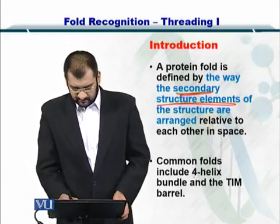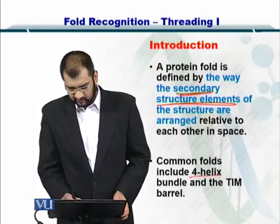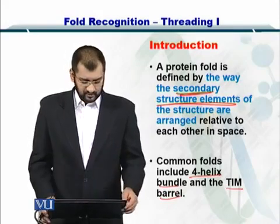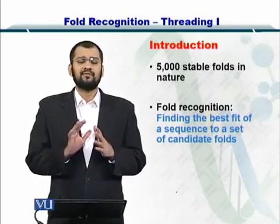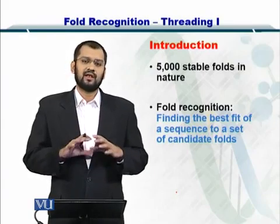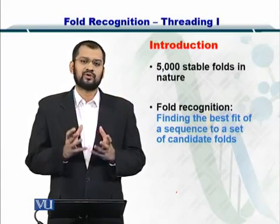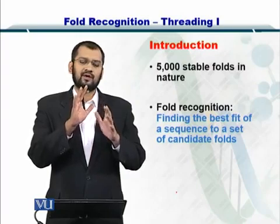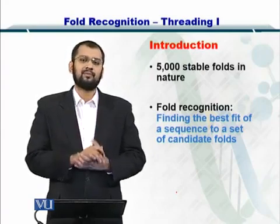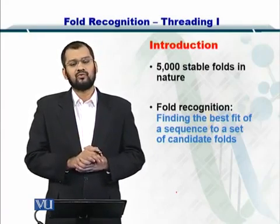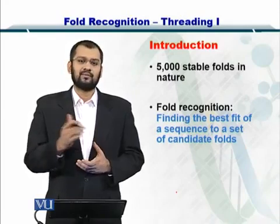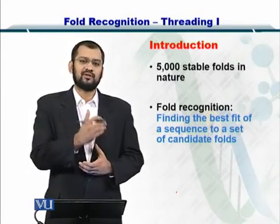The common folds, for instance, are the four-helix bundle, which is one of the most abundant, and the TIM barrel. You will be surprised to know that there are only about 5,000 stable folds in nature. If you look at all the proteins whose structure is known, you will only find around 5,000 different kinds of folds building up those proteins. It is very useful to have a database of all these folds to check for folds in protein sequences whose structure is unknown.